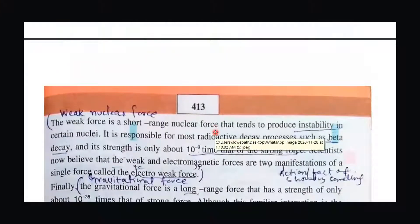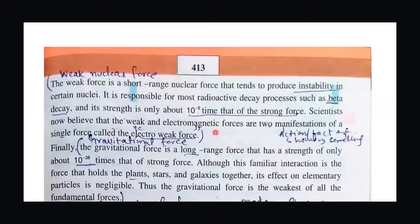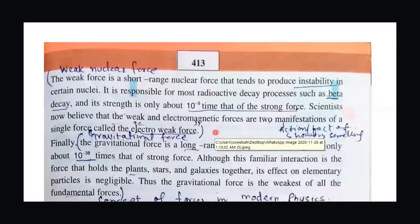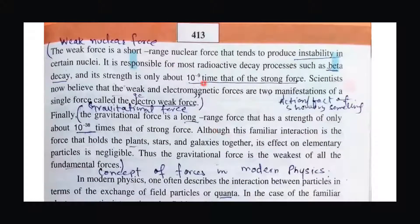Third is the weak nuclear force, which is again relevant to the nucleus. It is also a short range force. The force of attraction between the neutron and proton is less — the weak nuclear force makes the nucleus unstable. The weak nuclear force is associated with radioactive elements, and the process of radioactive decay is triggered due to weak nuclear force. In this process, mostly we have beta decay. Its strength is only 10 to the power of minus 9 times that of the strong nuclear force.